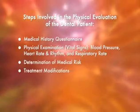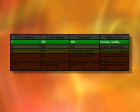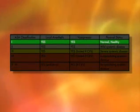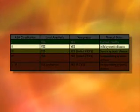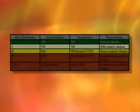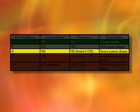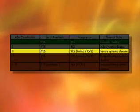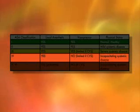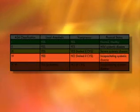The ASA physical status classification system helps us to determine medical risk during dental treatment. ASA 1 is defined as a normal healthy patient. ASA 2 is a person with a mild systemic disease. ASA 3 is a more severe systemic disease which limits activity but is not incapacitating. ASA 4 is an incapacitating systemic disease that represents a constant threat to the patient's life.